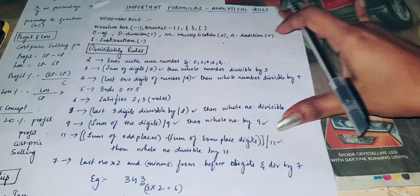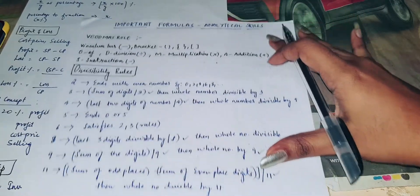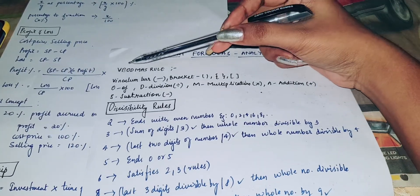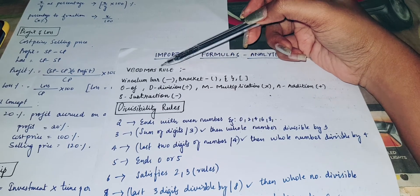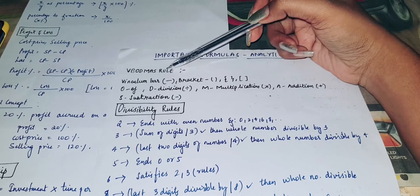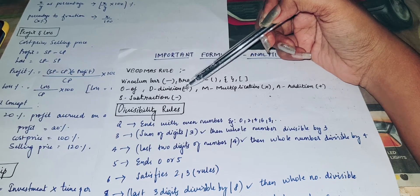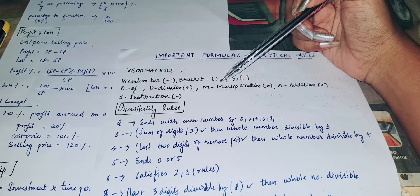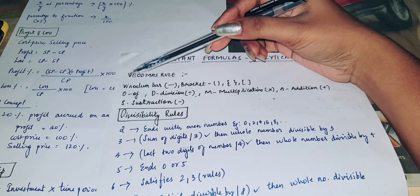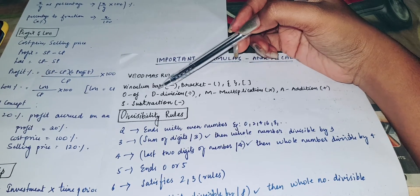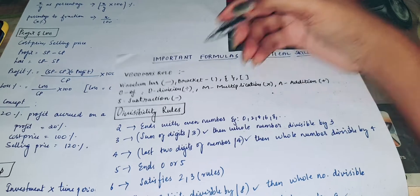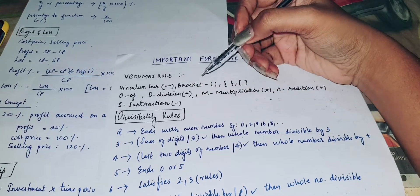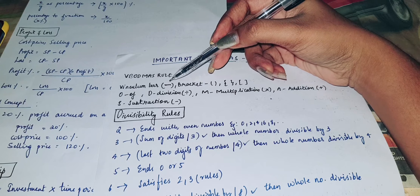Let's start with the present video. The first thing is VBODMAS rule. This is a very important rule. We also have to use this rule. V stands here for Vinculum bar. This is a very important rule.